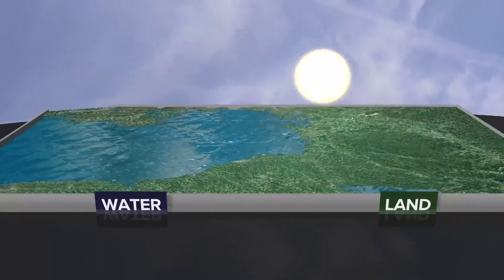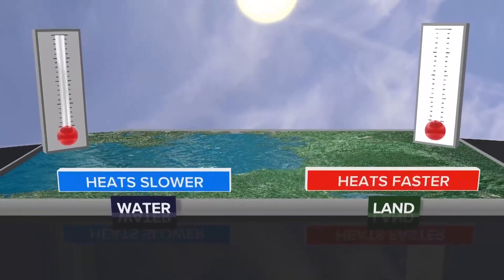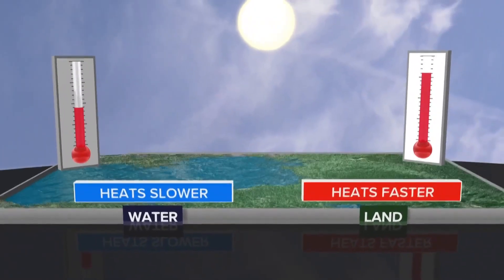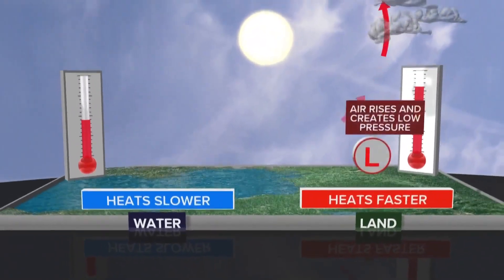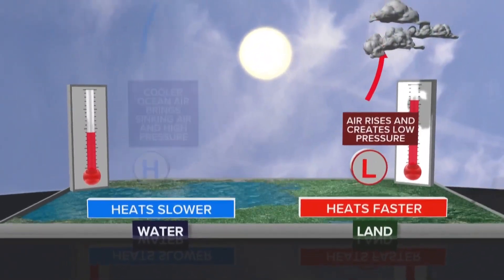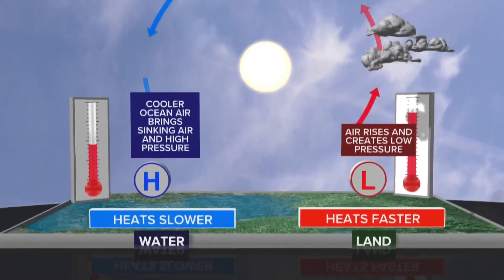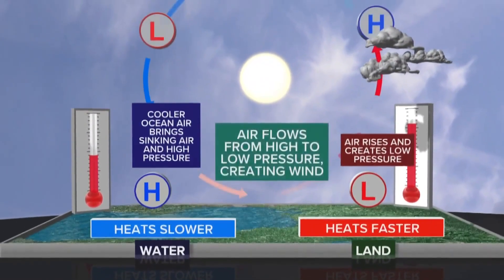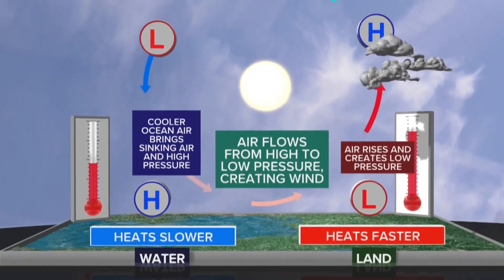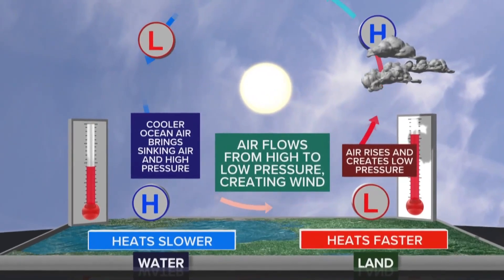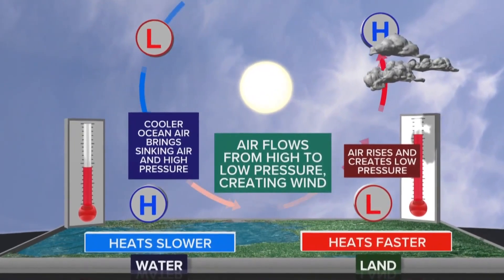Wind can also form from the sun's energy on a smaller scale. The sun heats the land quicker than water. That air warms and rises. Meanwhile, the colder air from the water moves in to replace it. This causes a wind, also known as a sea breeze.